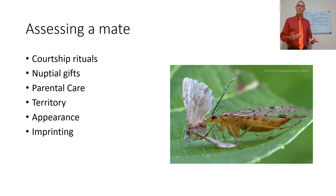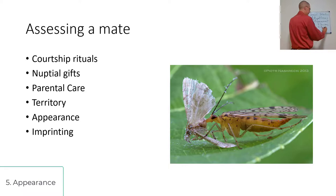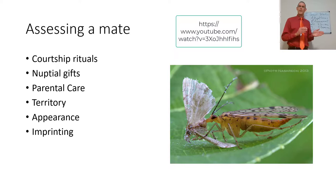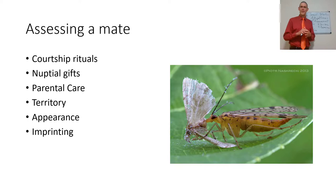Appearance is another factor. We discussed reasons for it — be it the sexy sons hypothesis, the reliability of a signal, or a species-specific signal. As a self-described ugly man, I prefer to say beauty is fleeting. But when it comes to animals mating, yes, appearance does matter. And last is imprinting.